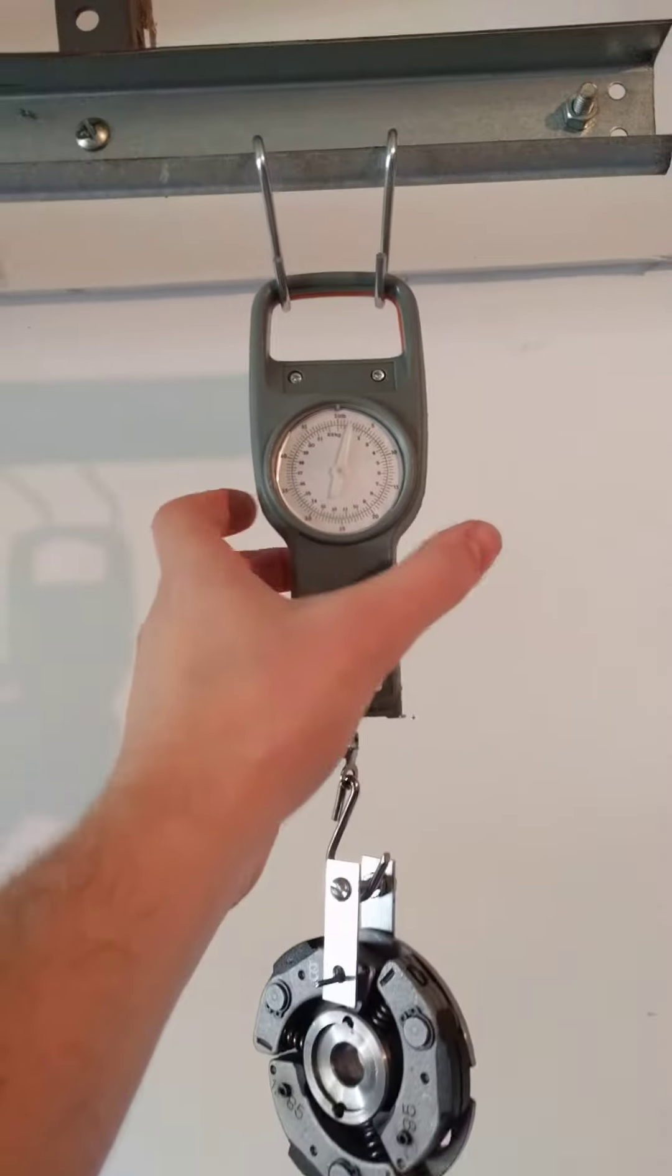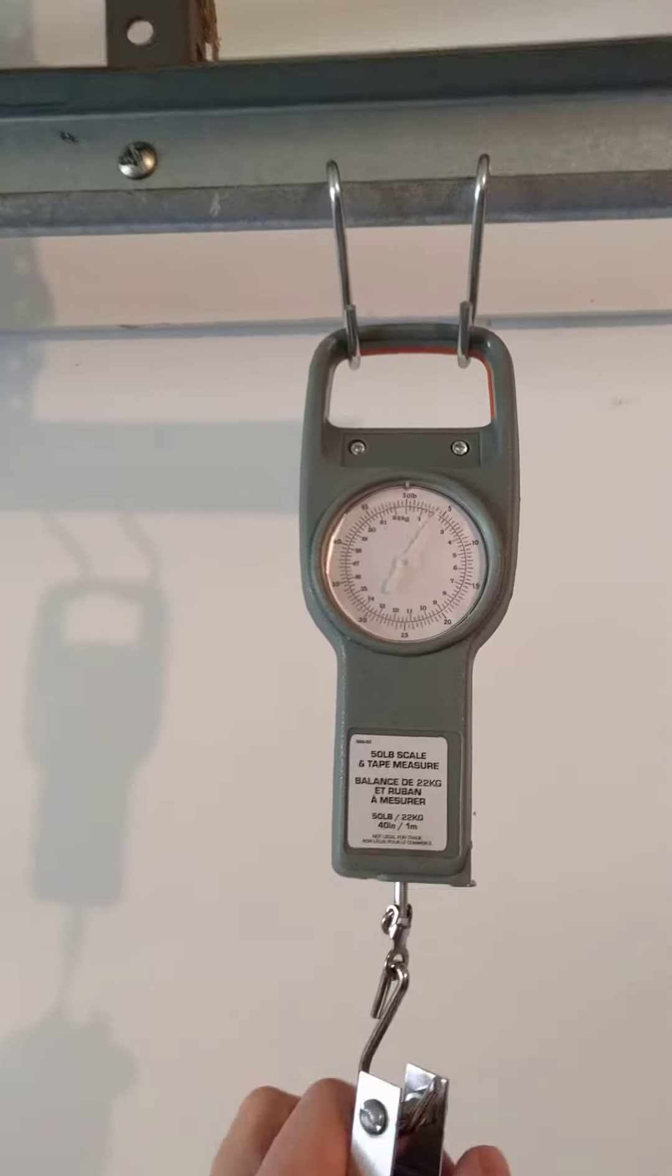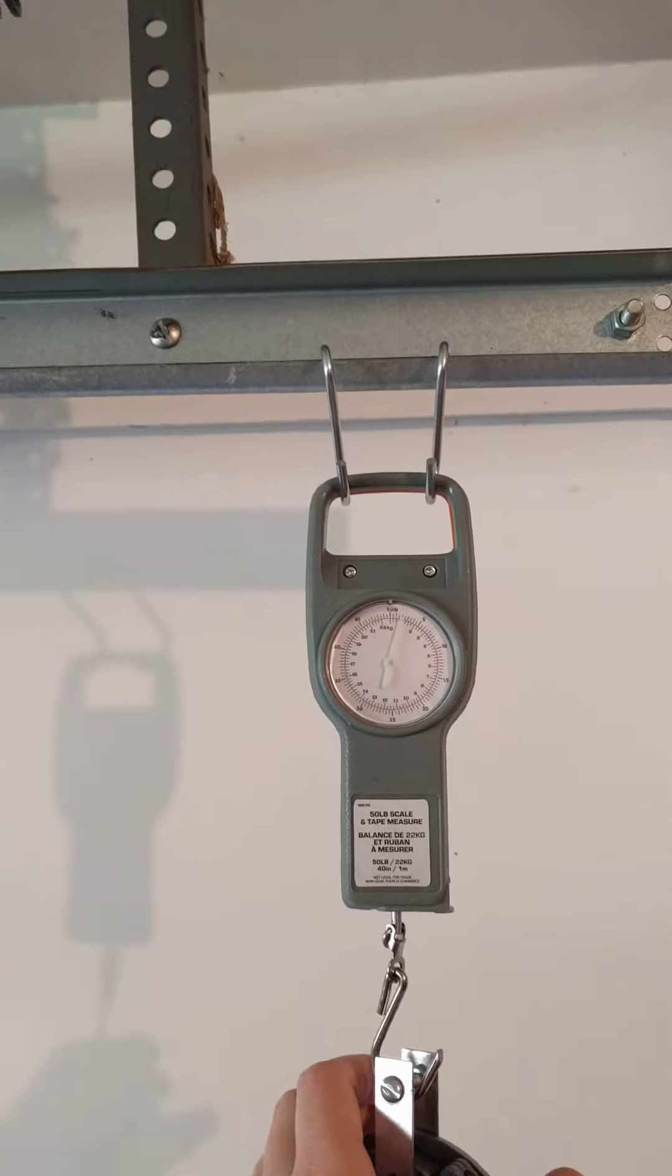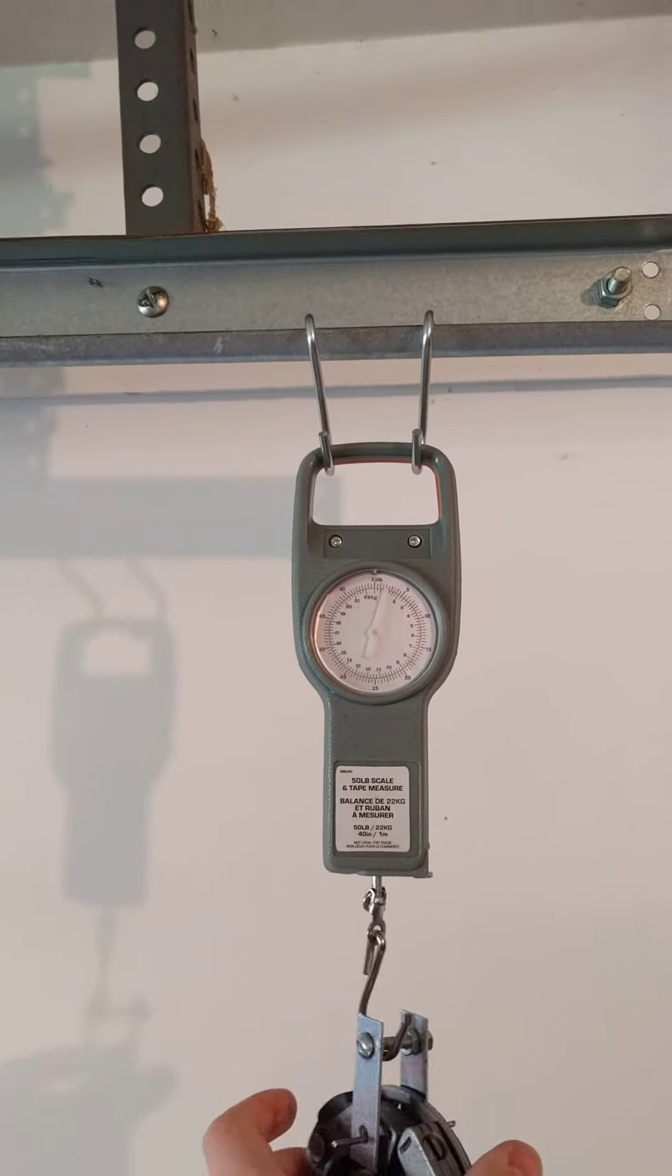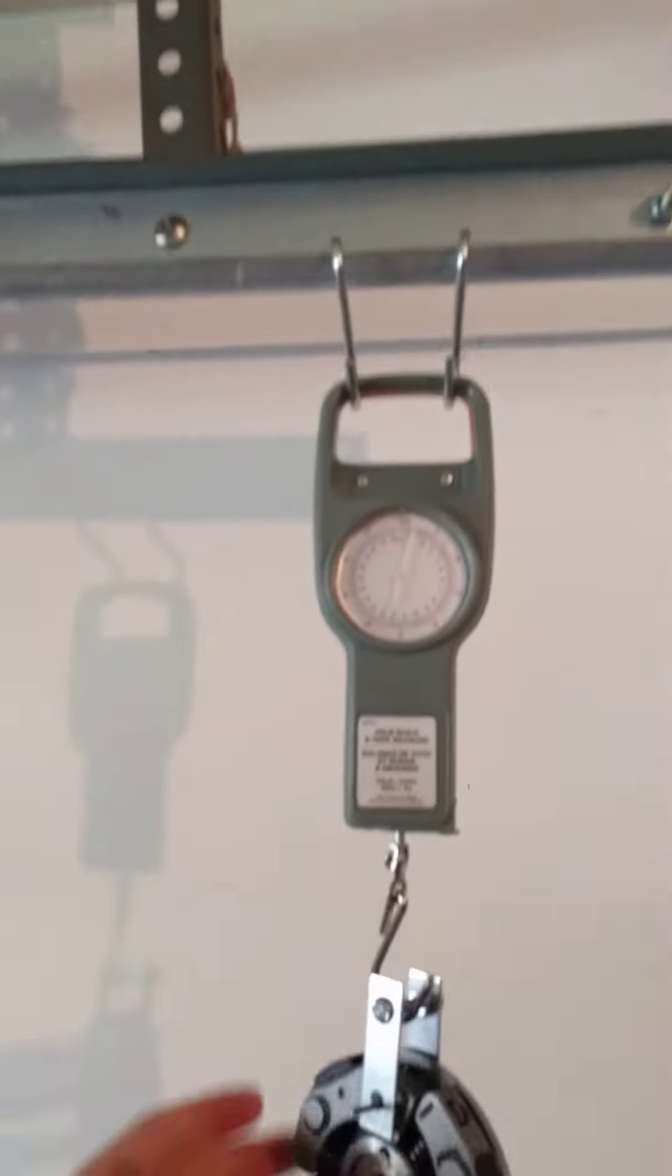Essentially you get a mechanical fish scale. It's easier than the digital ones because the mechanical one you can see gradation. Anchor it to something sturdy. You can use the edge of a work table or I'm using the rail for my garage door.